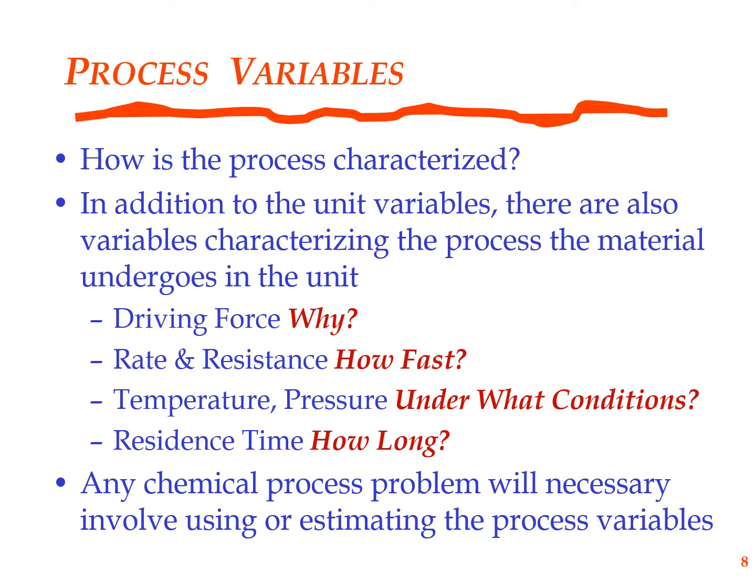Process variables: how is a process characterized? Any process is characterized by the following variables. What is the driving force for that process? In other words, why does the process take place in that unit in the first place? There ought to be some driving force that causes this process to take place. And then you have the rate of that process and the resistance offered by the system to that process. Unless you have a quantum process, there is always this relationship: rate is equal to driving force divided by resistance.